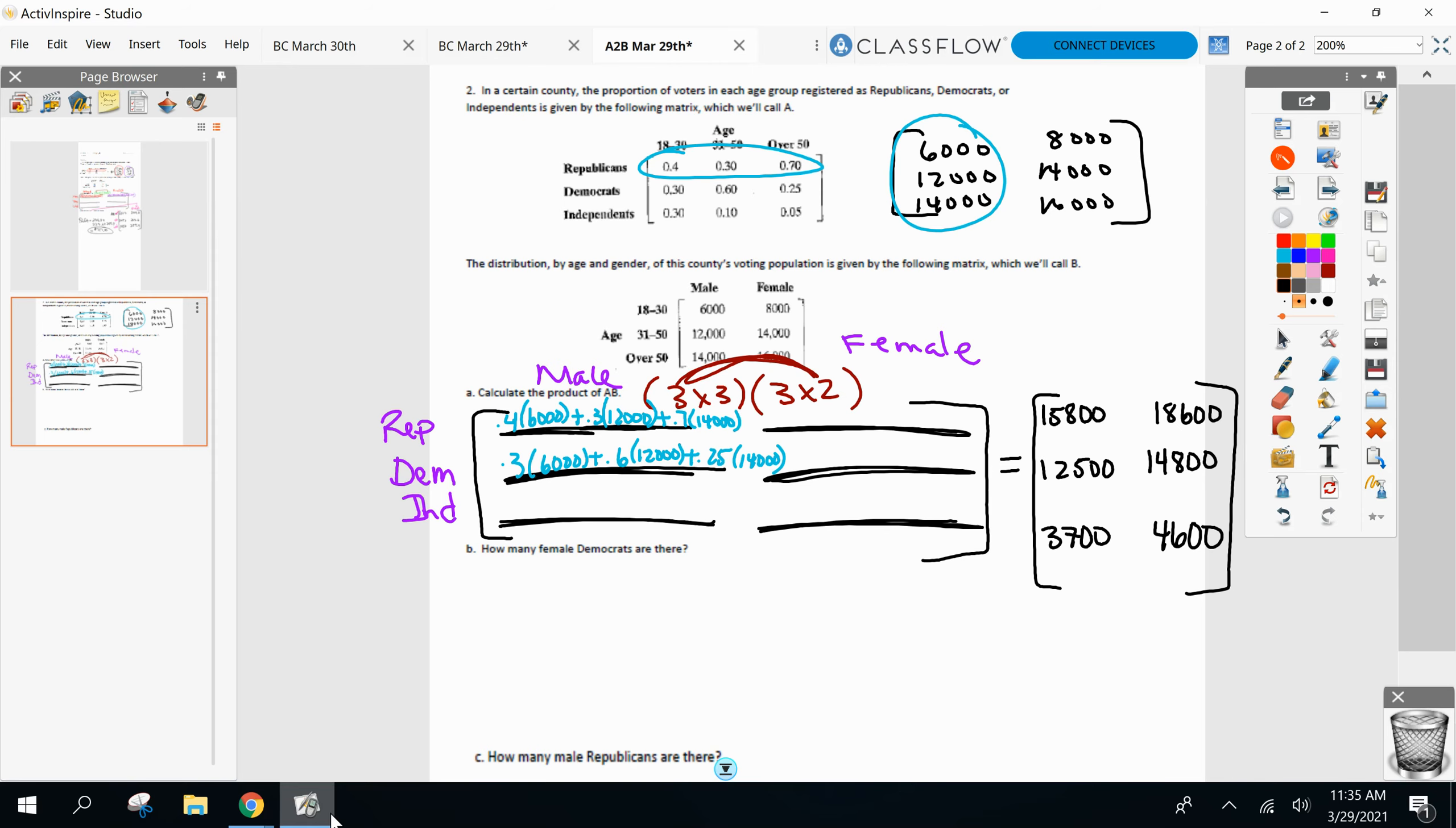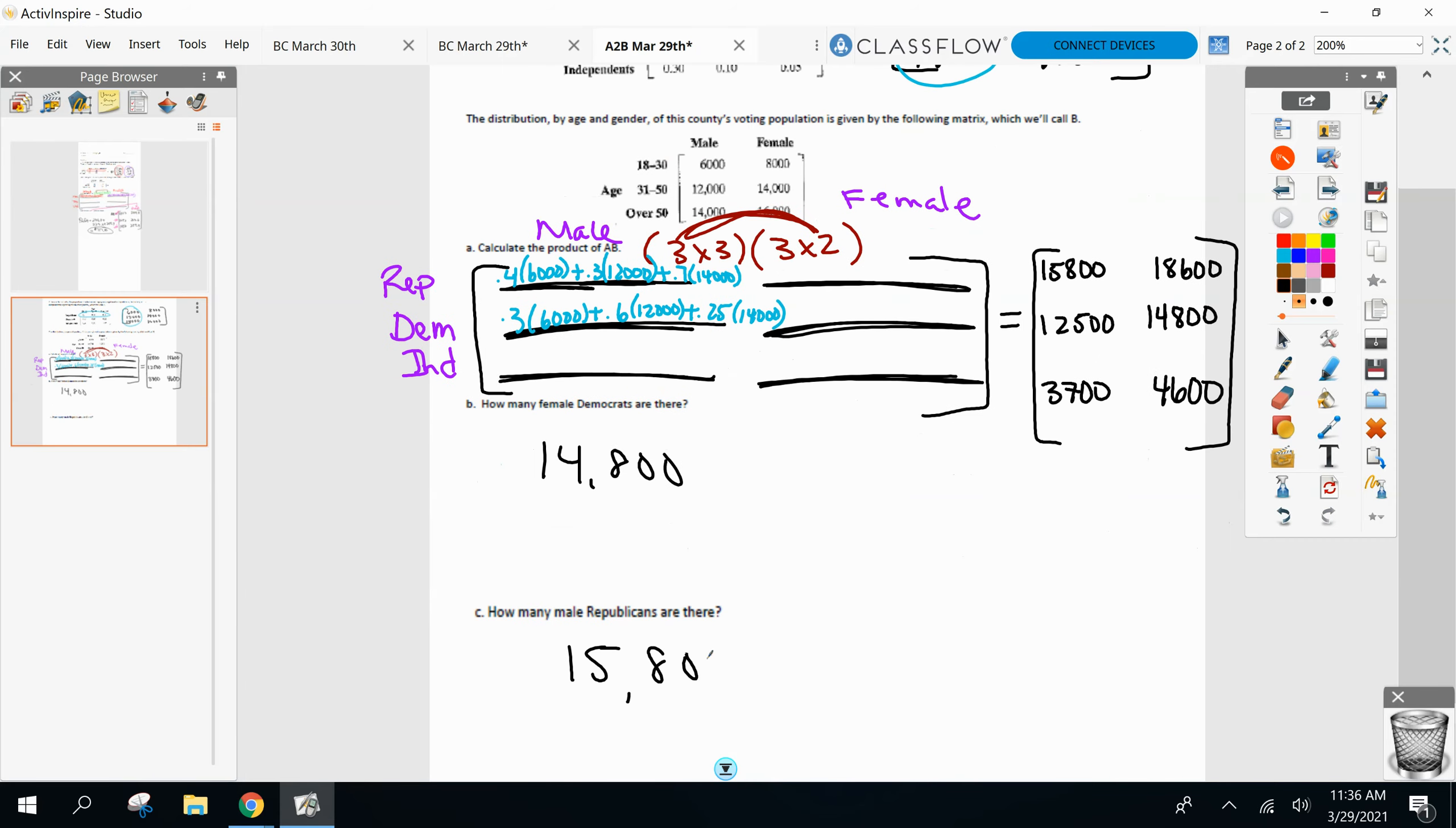Okay, you guys can see up on your screen that's what I ended up with with my three by two with all those numbers. And then from there again, this is why it's important to know what your rows and columns mean. Part B, how many female Democrats? Well, female was in my second column and Democrats were in my second row. So I got to figure out where they meet. Row two, column two, they meet at 14,800. And same thing goes for question C, how many male Republicans? Male in the first column, Republicans in the first row. So row one, column one, 15,800.